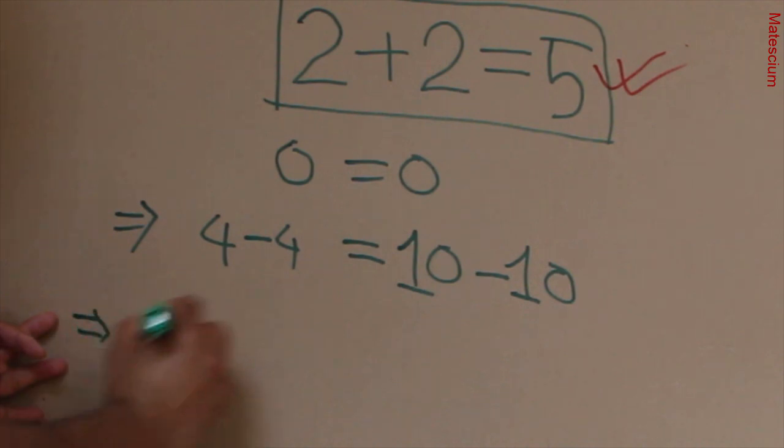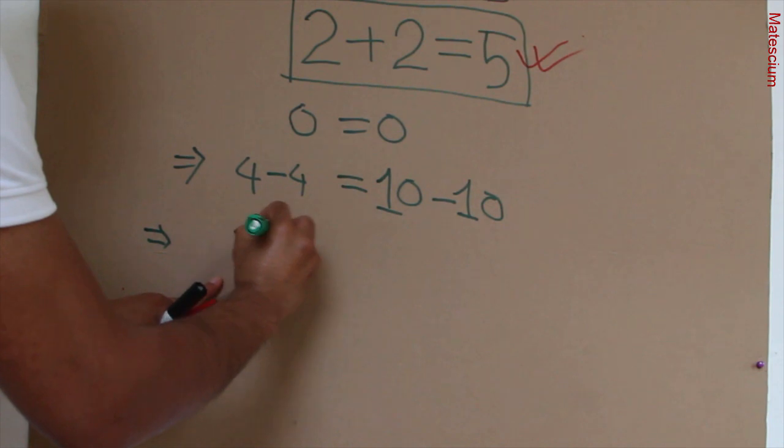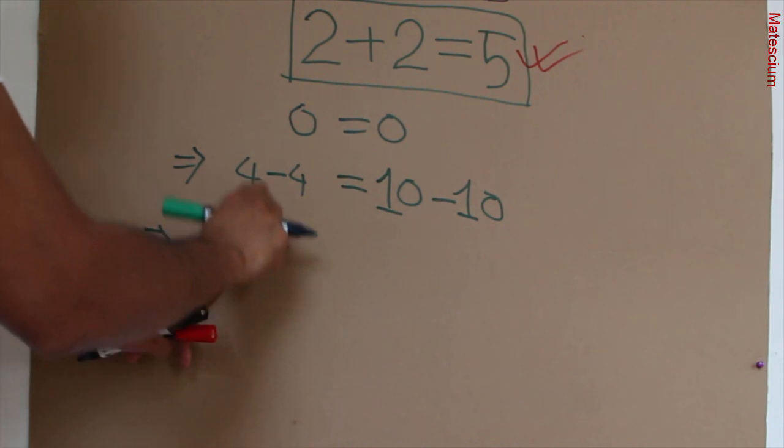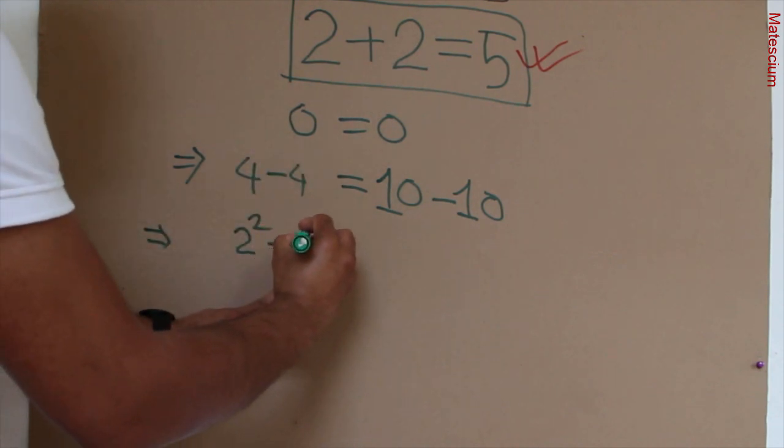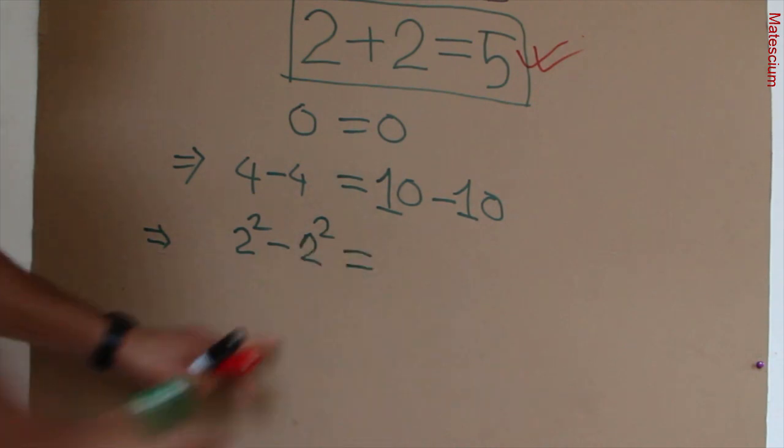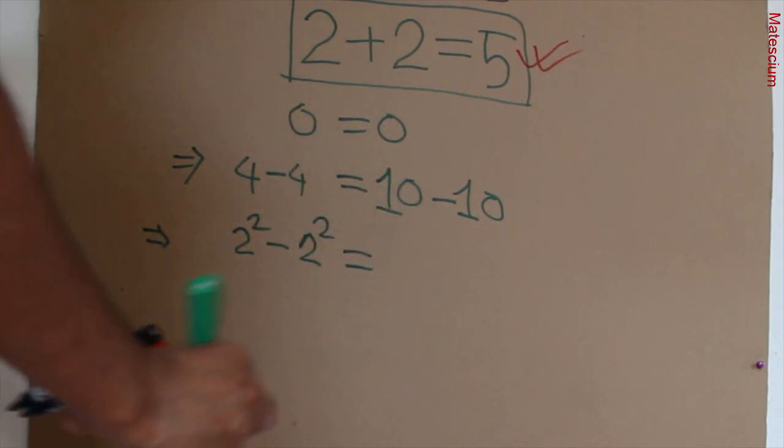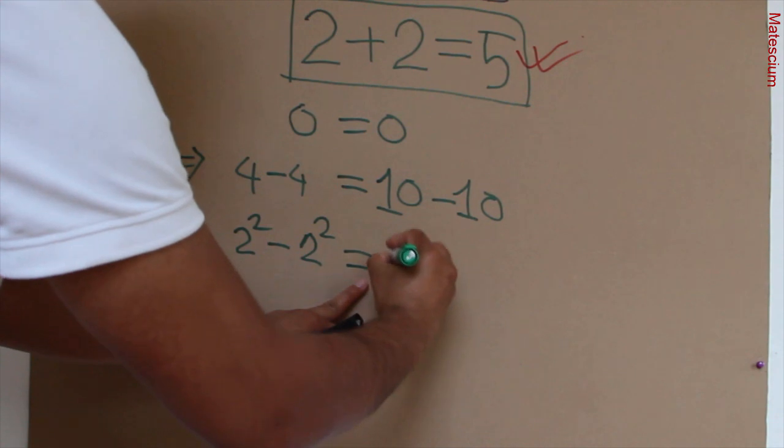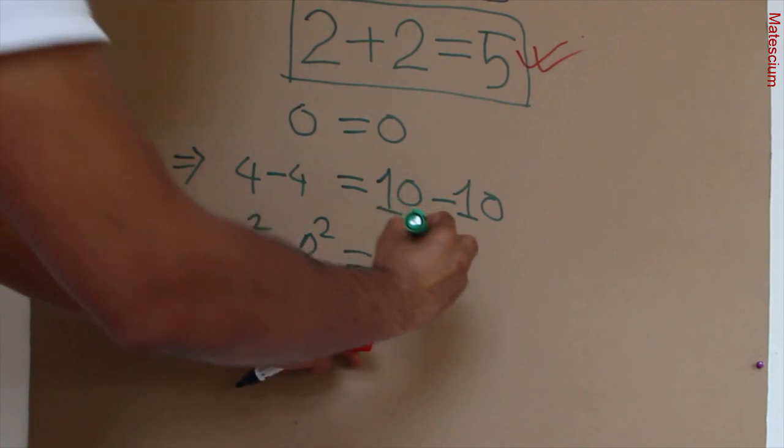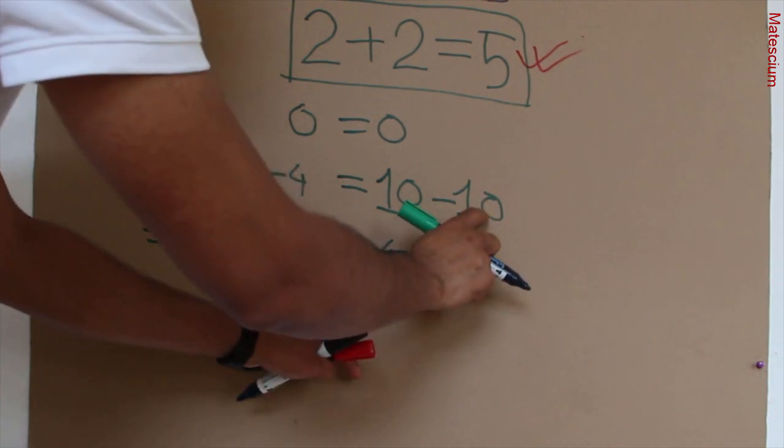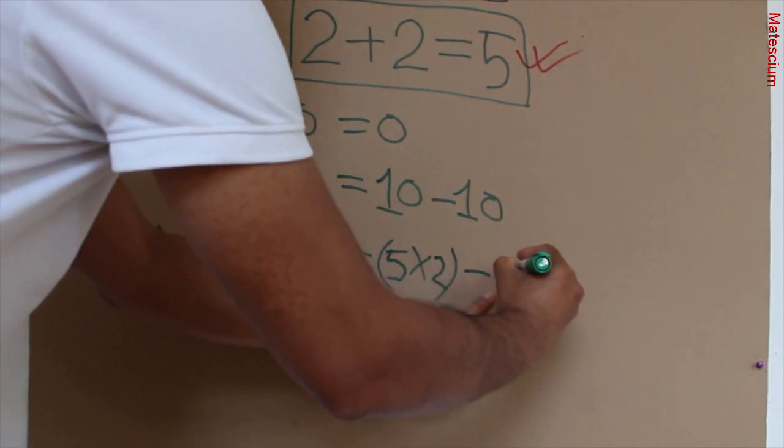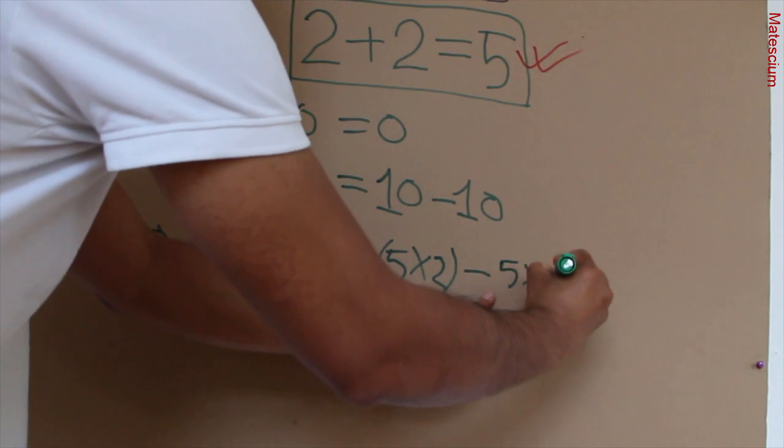The next step is, this 4 can be written as 2 squared. And this 2 squared minus is here. And this 4 can also be written as 2 squared. On the right hand side, this 10 can be written as 5 times 2. Minus, that 10 also can be written as 5 times 2.